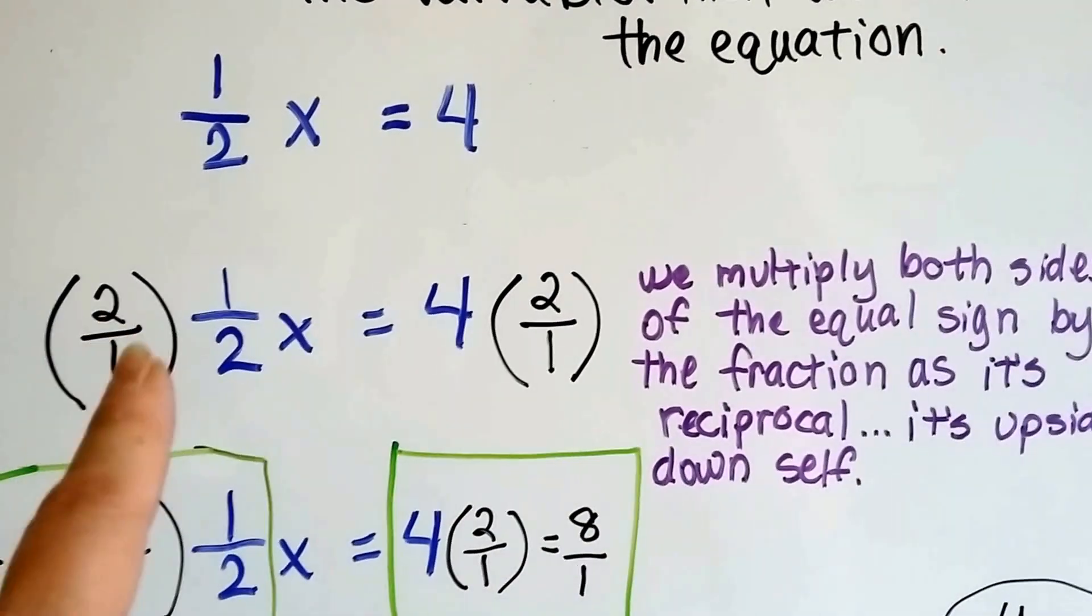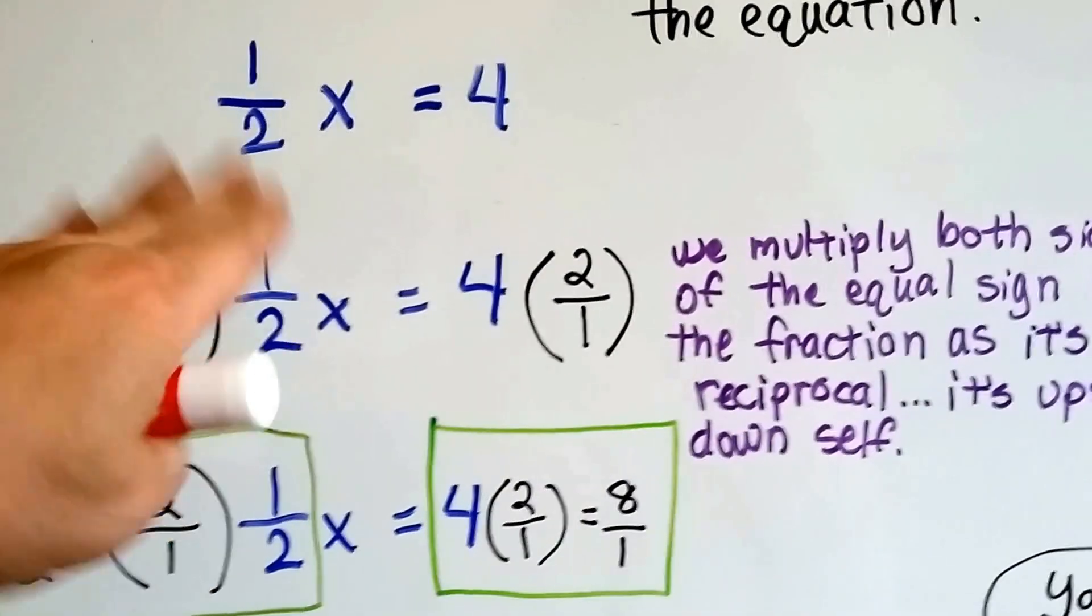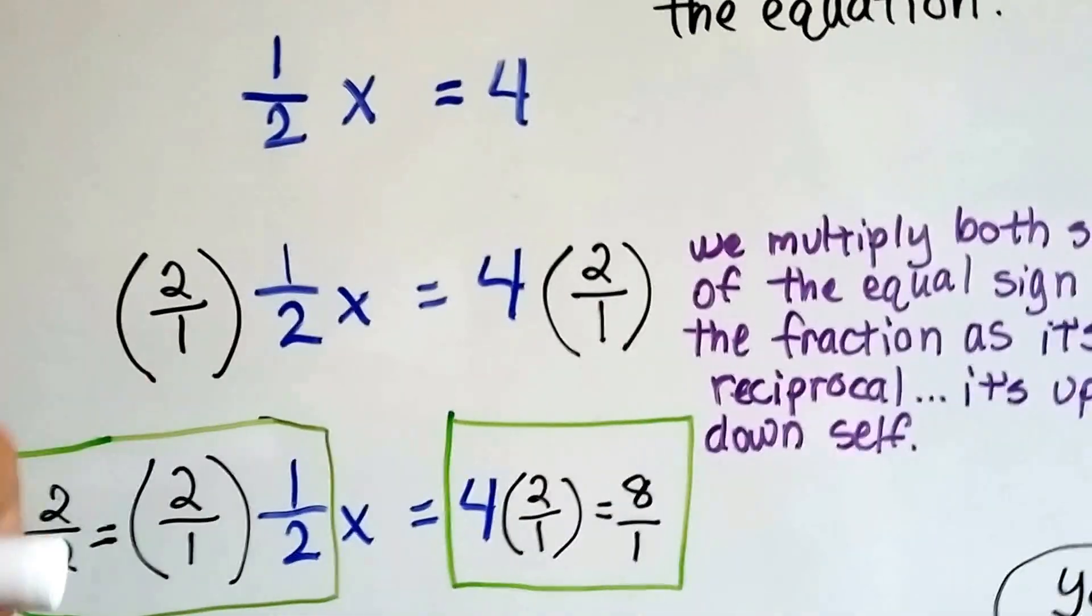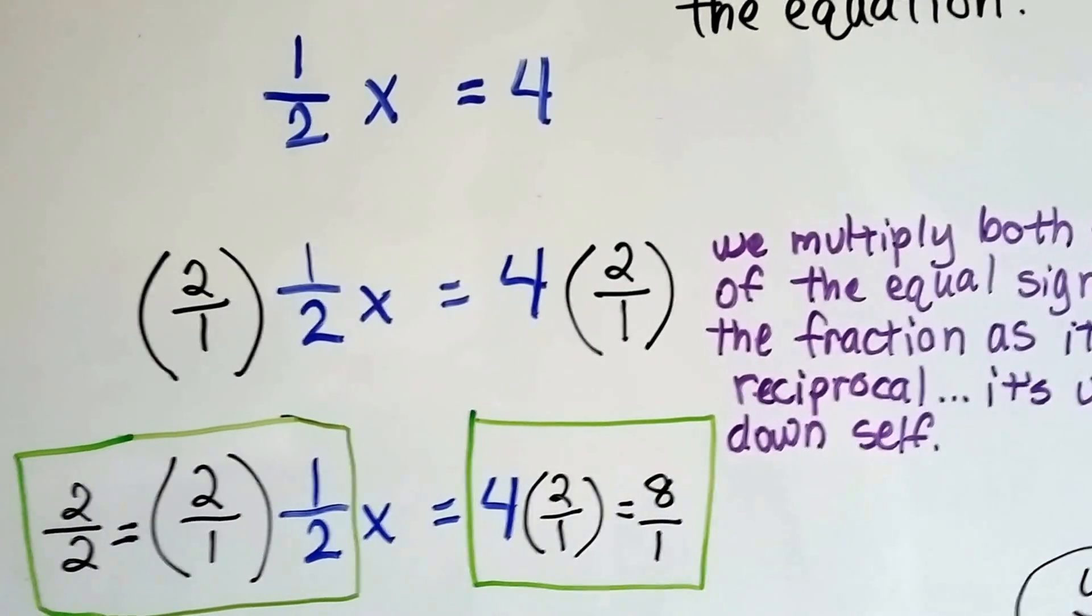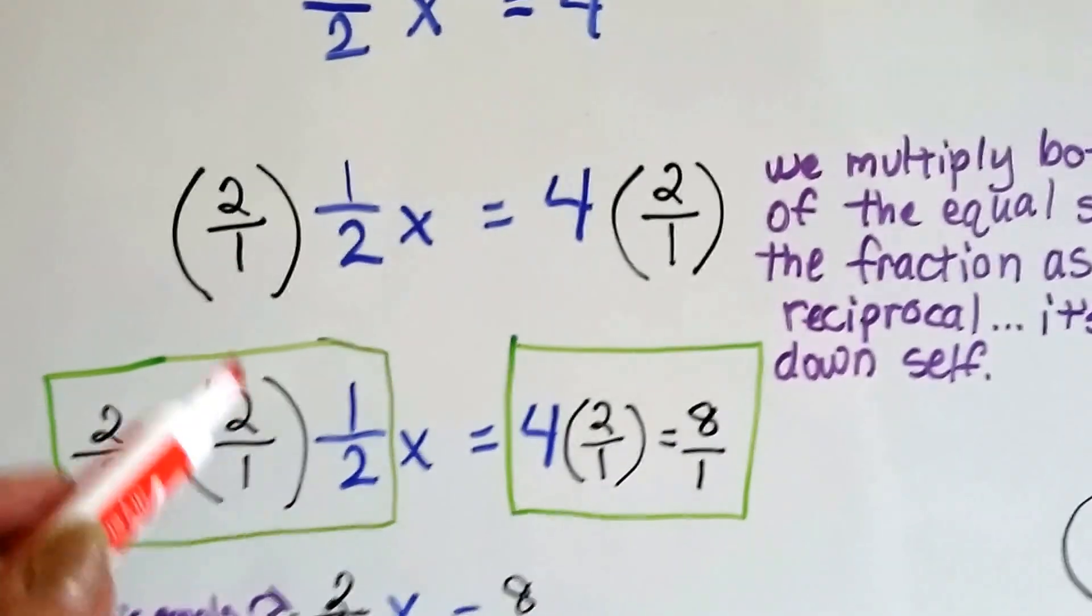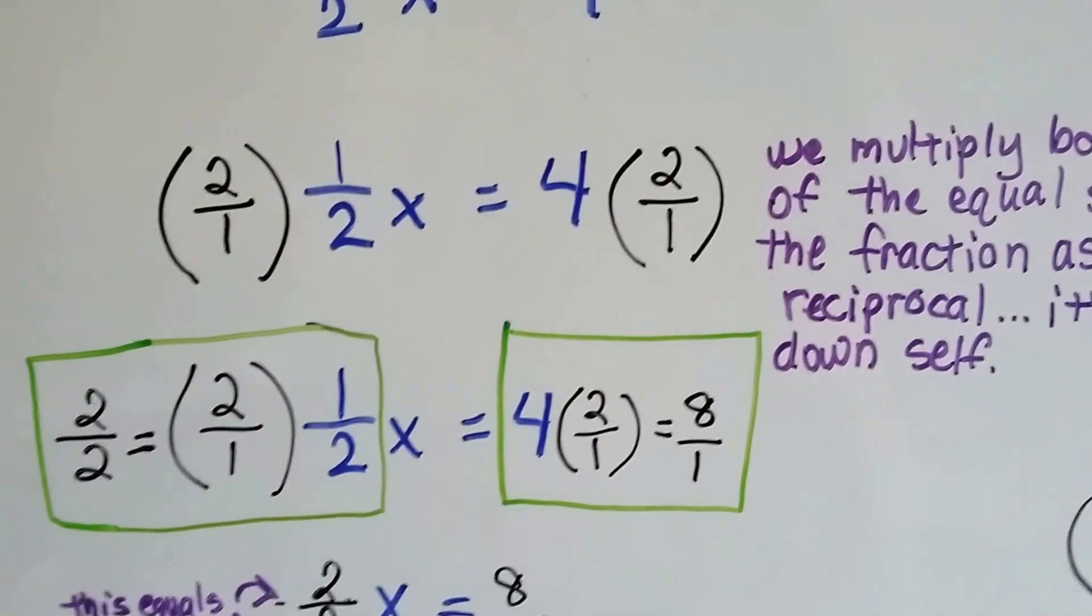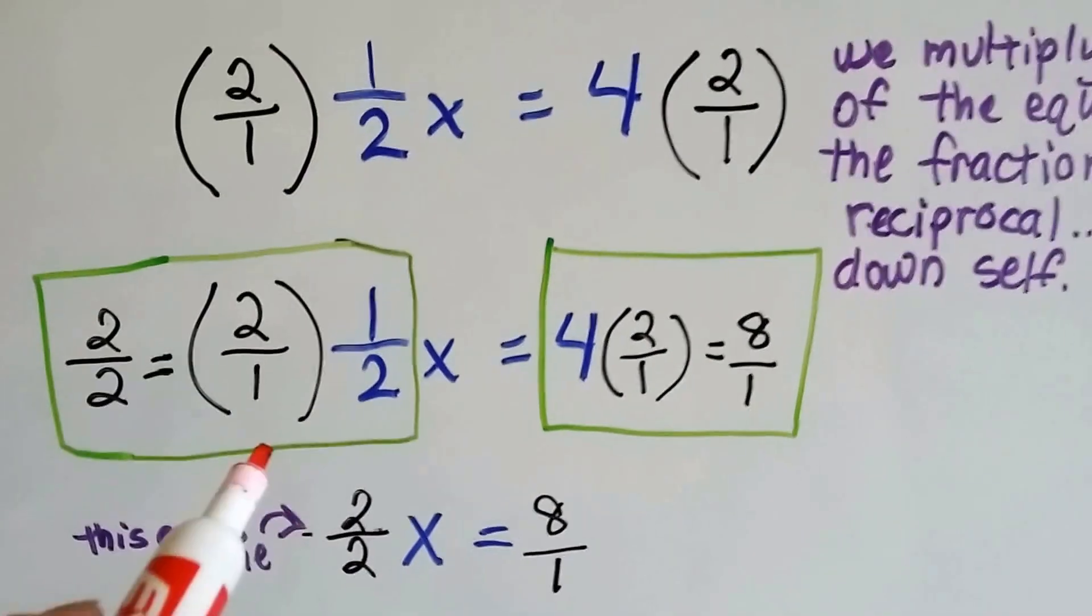It's its upside-down self. And we do it to each side of the equal sign, because an equation is like a scale, and we don't want one side to be heavier than the other. We have to do the same thing on this side that we do on this side, okay? So if we multiply this by the reciprocal to get this x alone, we have to multiply this side by the reciprocal. So we do.